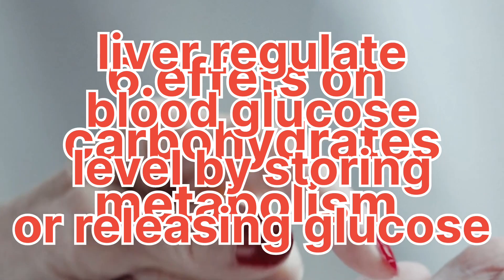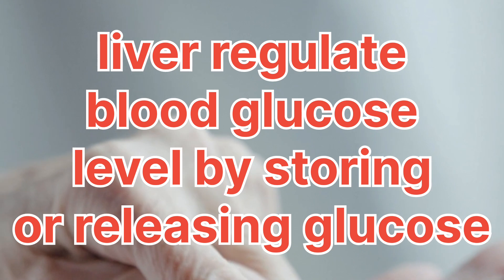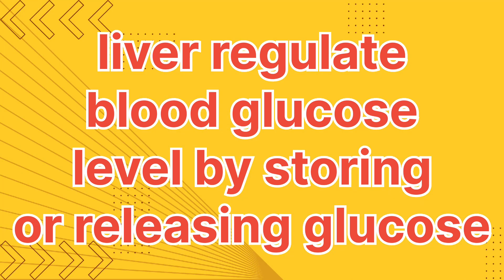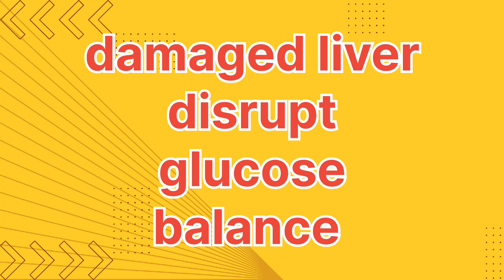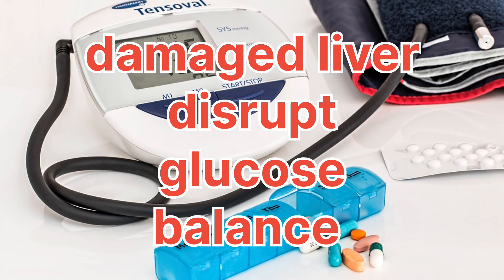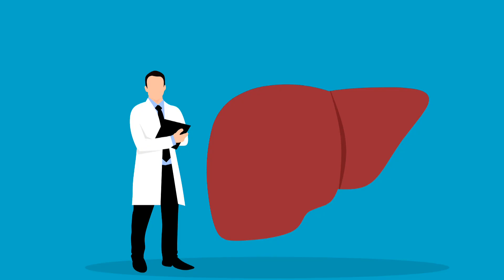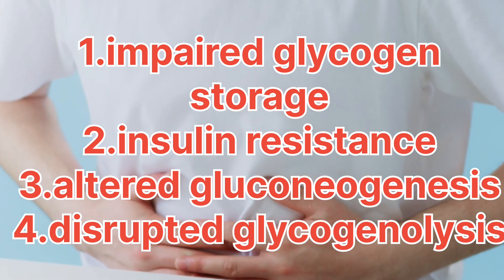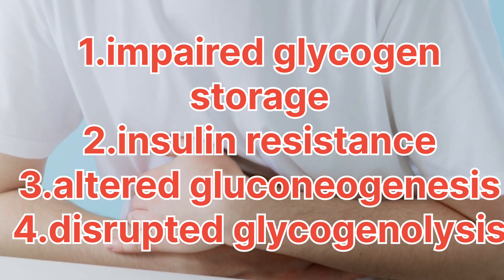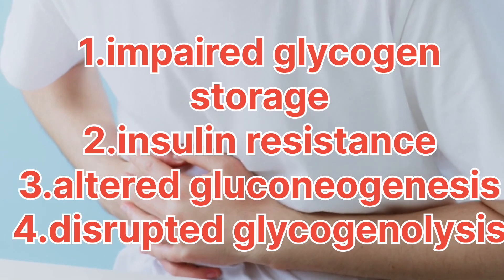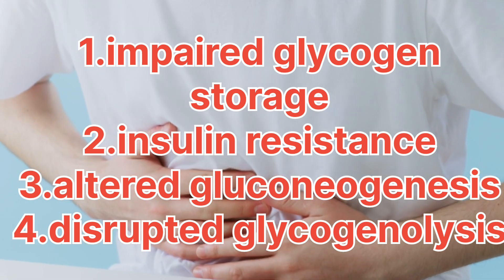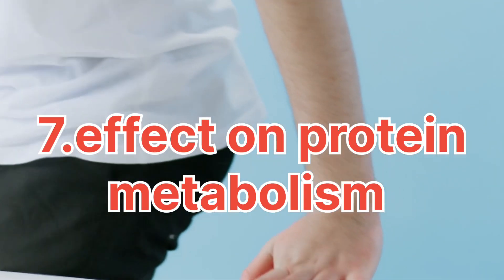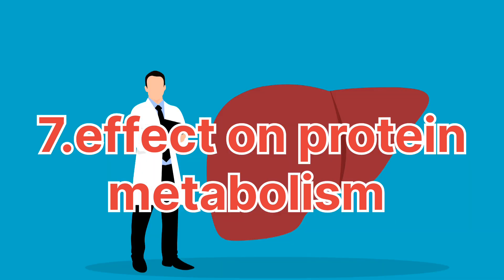Number six: carbohydrate metabolism. A damaged liver can significantly impact carbohydrate metabolism. The liver plays a central role in regulating blood glucose levels by storing or releasing glucose as needed. Liver damage can disrupt this balance, leading to various issues like impaired glycogen storage, insulin resistance, altered gluconeogenesis, and disrupted glycogenolysis. In this way, liver damage can disturb various aspects of carbohydrate metabolism, contributing to abnormal blood glucose levels and insulin resistance.